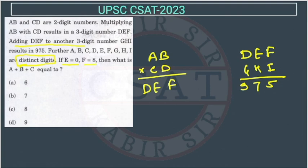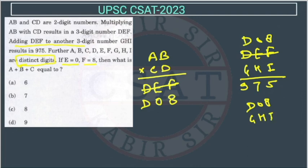E is 0, F is 8. So now E is 0, so this will become 0, and F is 8. So we can write that. And here also it will become D08. So this we can write here, D08, and this is GHI, and we are getting 975.